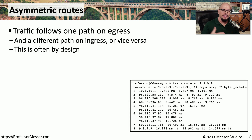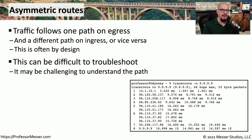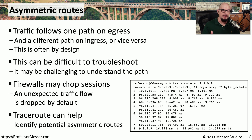We often think of network communication as a single wire between devices, but in reality we create redundancies so that if we lose a router or switch, the network continues to operate. Unfortunately, this also means we might create an asymmetric route — traffic going one path outbound and a completely different path inbound. If engineered properly, an asymmetric route isn't a problem. But if accidentally created, you may find problems with firewalls or other state-based devices not properly understanding the state of a flow and dropping traffic. You can sometimes use traceroute to help identify where an asymmetric route might be.